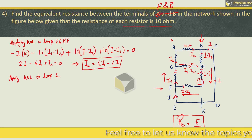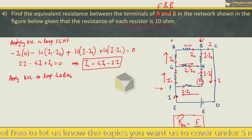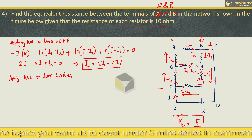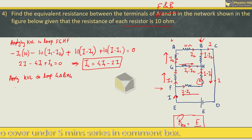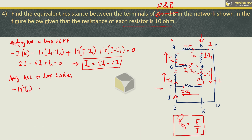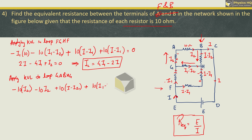Applying KVL to loop G-A-B-H-G: from G to A in the direction of current gives −10I2; from A to B gives another −10I2, combining to −20I2. From B to H, going against the current, gives +10(I − I2). From H to G, also against the current, gives +10(I1 − I2). Setting the sum to zero and simplifying gives: I + I1 − 4I2 = 0.